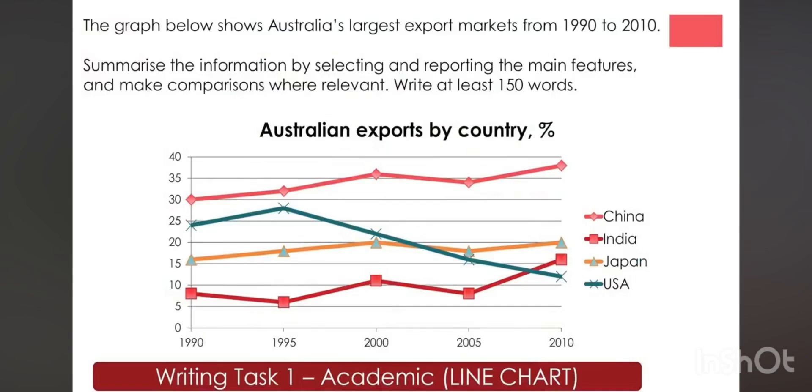Now in which you have one, two, three, four countries: China, India, Japan, USA, and the years 1990 to 2010. This is a line chart. How can you write this essay? First of all, we face the question and write the changed word.